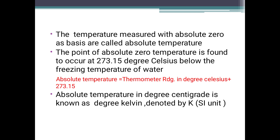Absolute temperature is measured from absolute zero. The point of absolute zero temperature is found to occur at minus 273.15 degrees Celsius — that is, below the freezing temperature of water. It is minus 273.15 degrees Celsius.